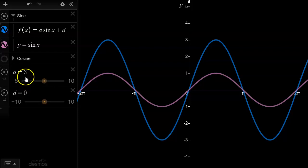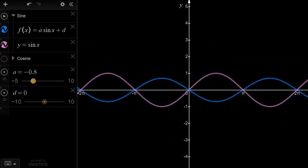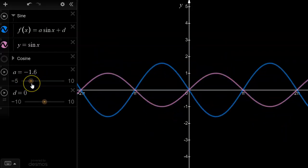When the a value is negative, then what we see is a reflection in the x-axis. Even though the a value is at this point negative 1.6, we wouldn't say that the amplitude is negative 1.6, we would still say that the amplitude is just simply 1.6 because the definition of the term does not allow for amplitudes to be negative.